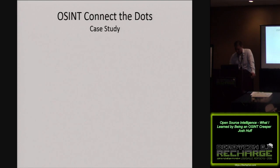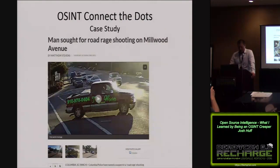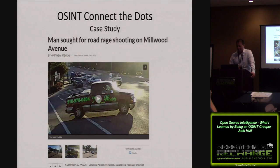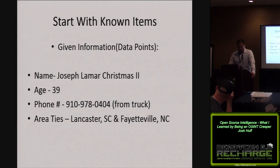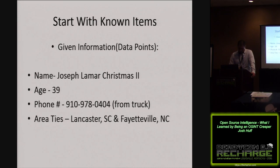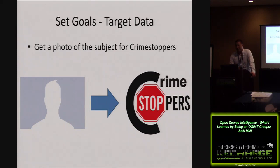Last year in October in Columbia, this news story came out: two gentlemen in two different vehicles get in an argument, one pulls out a gun and fires at the other guy. Crime Stoppers threw this up looking for information. A surveillance picture came up with a big, bright green phone number on the side of the shooter's truck. Starting with known items out of the news story: Joseph Lamar Christmas is the name, age 39, the big bright green phone number from the truck, and area ties to North Carolina and South Carolina. We set our goals: find a photo of this guy, give it to Crime Stoppers.